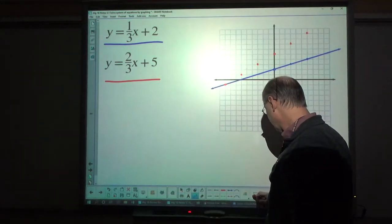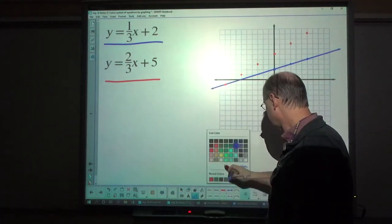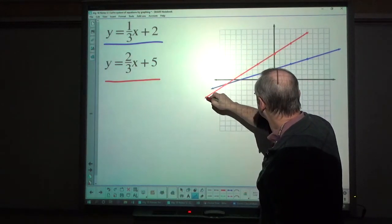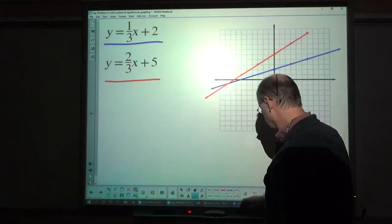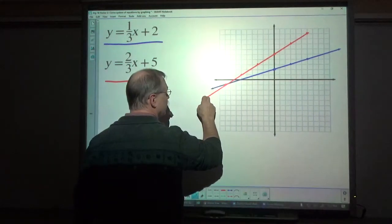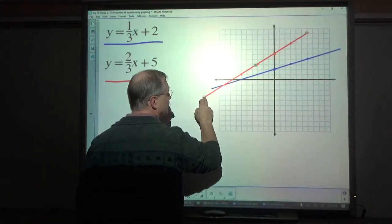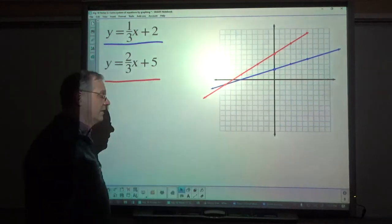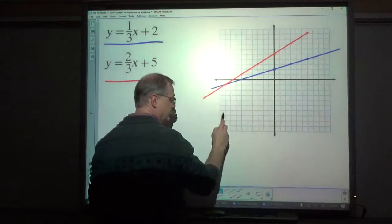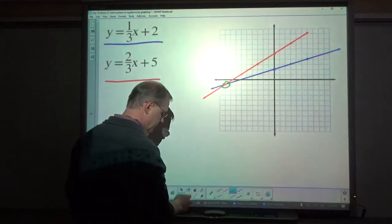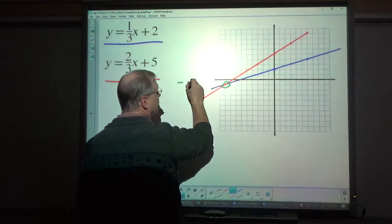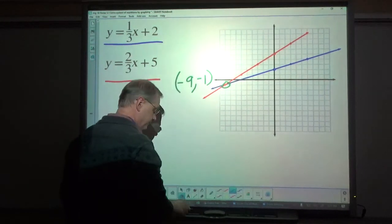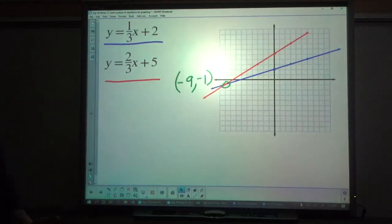Now let me graph this. And there's my line and the two lines cross right there. And that solution in this case is at the point negative 9, negative 1. And that's how you do it.